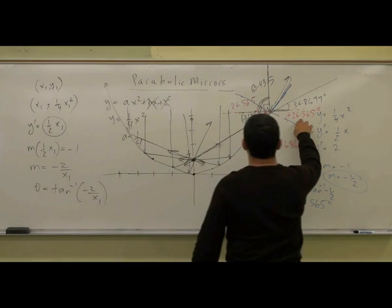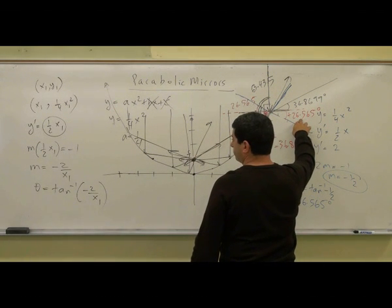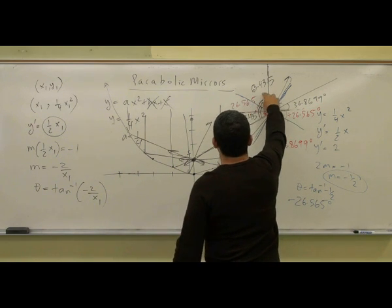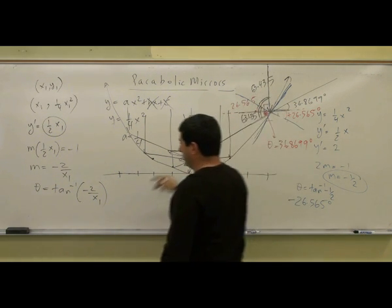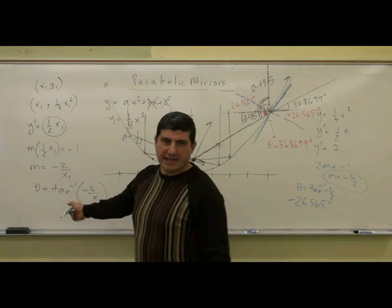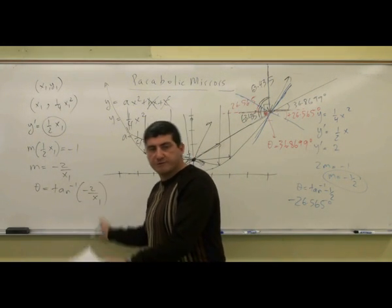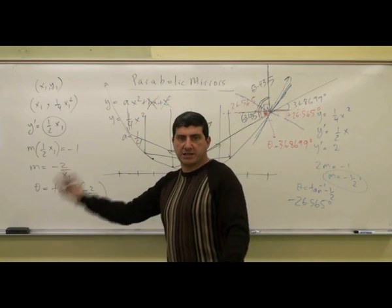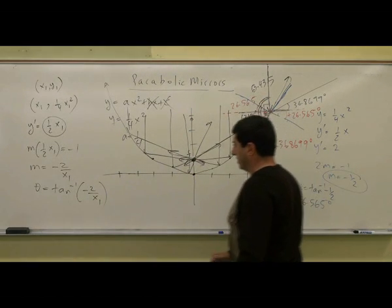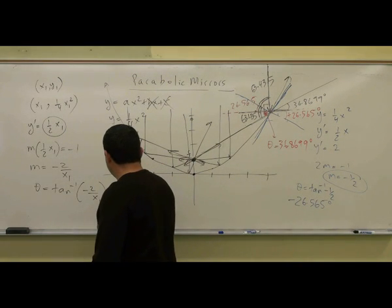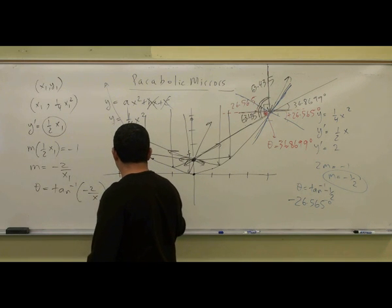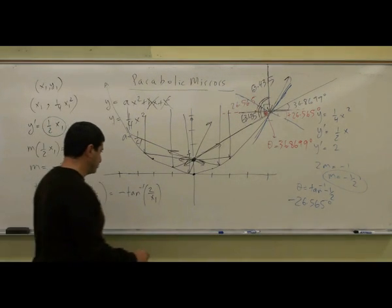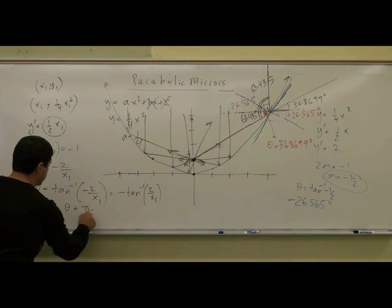And that gave us the negative 26.65°, right? And then we subtracted that from 90 to get this angle, the 63°. So this is naturally going to give you a negative answer. You can either take the absolute value of this and subtract it from 90, or you could add this to 90. Either way, you're going to get the 63°. So this is going to give you negative tan inverse of 2 over x1. Now I'm going to add this to π over 2. So theta plus π over 2.